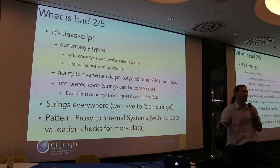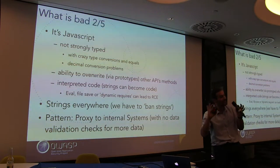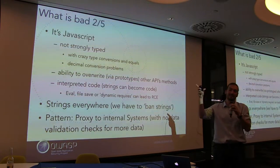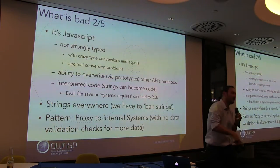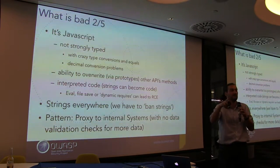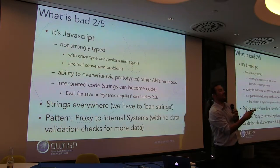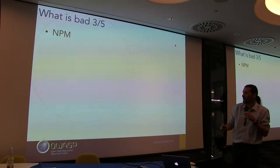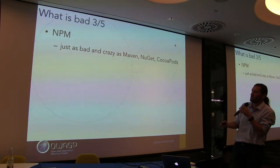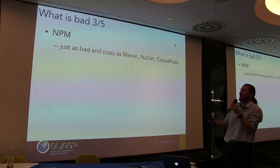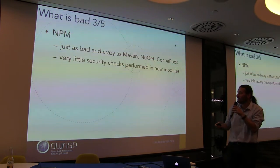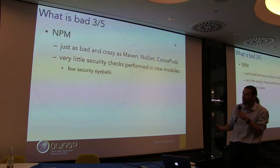I see a lot of Node in this pattern: it's a proxy to internal systems. The internal system says 'I'm internal, nobody touches me' — except the Node in front is literally just proxying the request, takes the data, massages it a little bit, and sends it right to the internal network. You might as well be connected to the internet. NPM is as crazy and complex as Maven, NuGet, CocoaPods, and all that — with very little security checks.